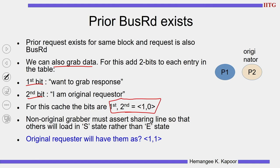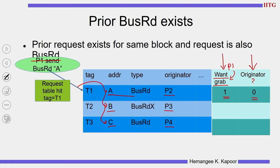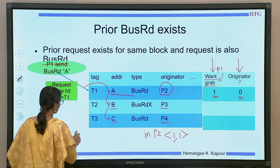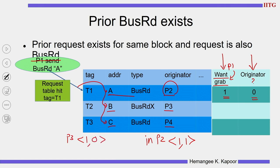If P3 also comes and wants to read A, it sets the grab bit to 1 and originator bit to 0, same as P1. So overall, three processors will grab the data when the answer comes. Initially only P2 had asked for data. When the response comes, P2 will consume the data, and we need to decide whether it should load the block in shared or exclusive state. It will load in shared if other readers are present, or exclusive if there are none.